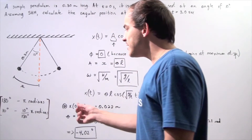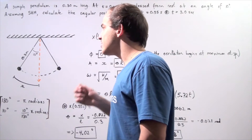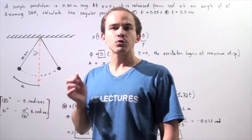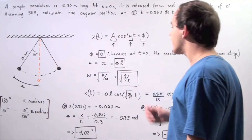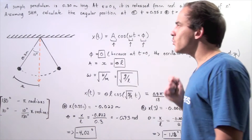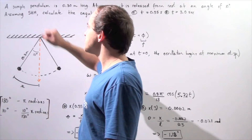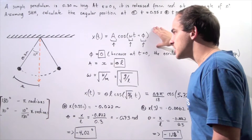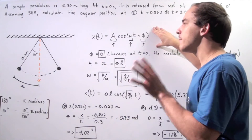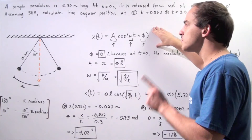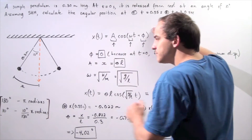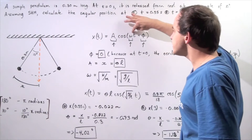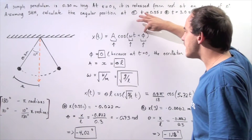Let's recall the relationship between radians and degrees: 180 degrees is equal to pi radians, and we're going to need to use this fact in our equation. Because we're assuming our simple pendulum is under simple harmonic motion, we have the following general equation that gives us the displacement of the object — its position in meters with respect to time. This equation gives us the quantity x, where this is our amplitude, this is our angular frequency, and this is our phase angle.